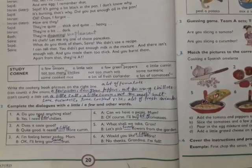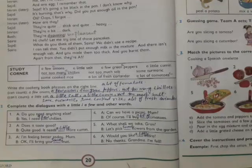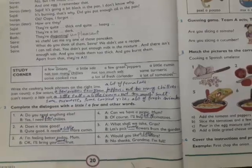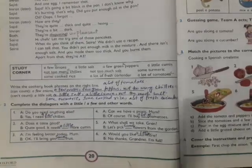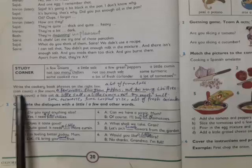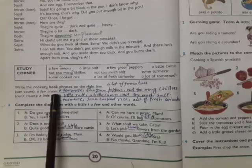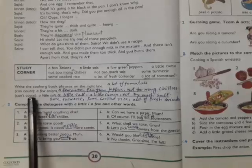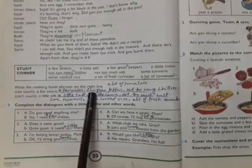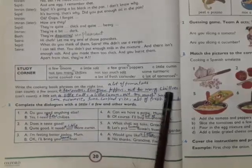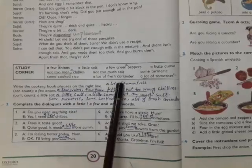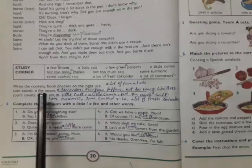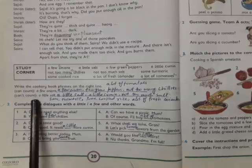Now come to the study corner. Here in the box we are given names of a few things. We have to write in the first line the things which we can count, like a few onions. From this box we have to select the things which we can count like two green peppers, not too many chilies, and a lot of tomatoes. I have written all these things which we can count over here.